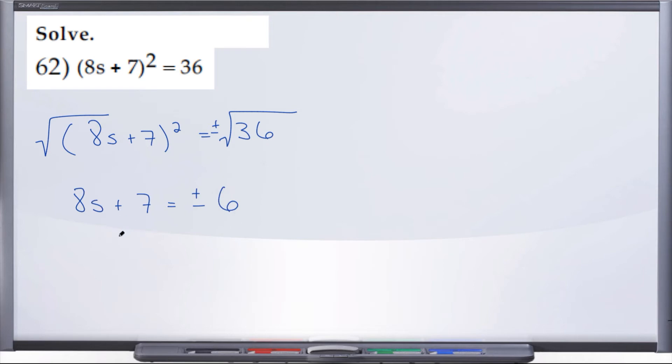Continuing to solve for s here, we'll subtract 7 from both sides. So we have 8s equals, and now we're going to have two answers. The first is going to be negative 7 plus 6, and the second will be negative 7 minus 6.